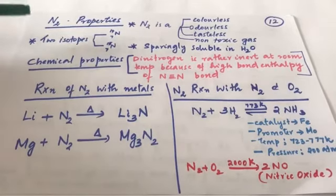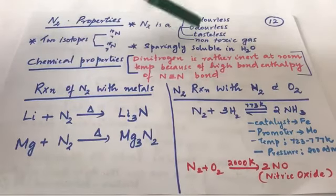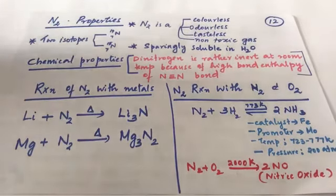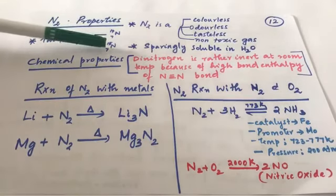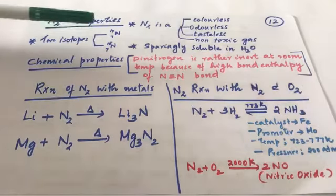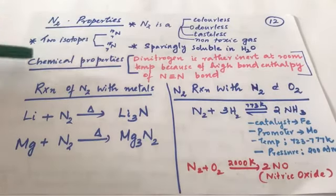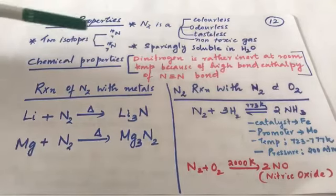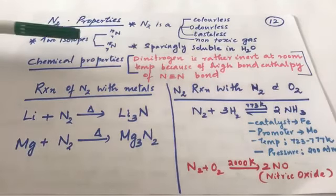Nitrogen is a colorless, odorless, tasteless, non-toxic gas — those are the physical properties. It has two isotopes: N-14 and N-15, and it is sparingly soluble in water.